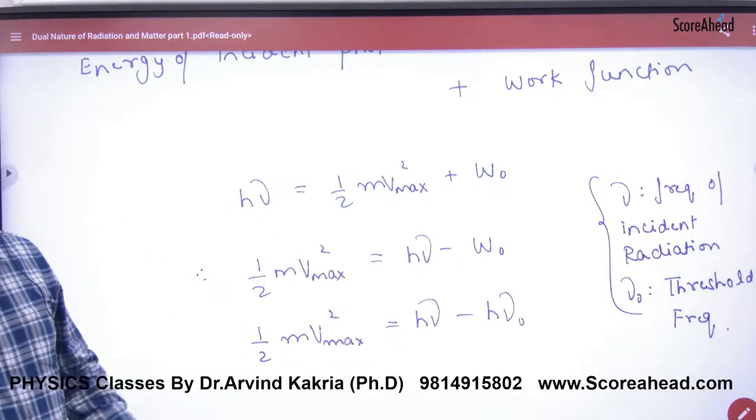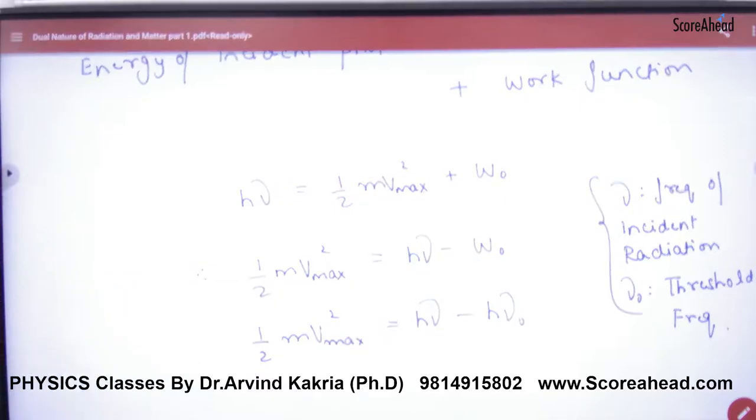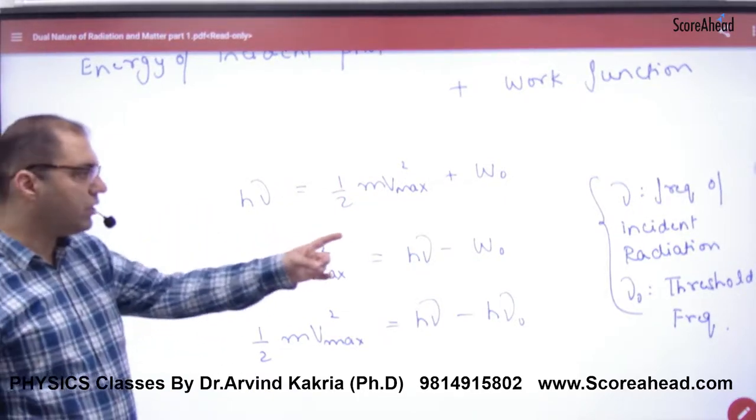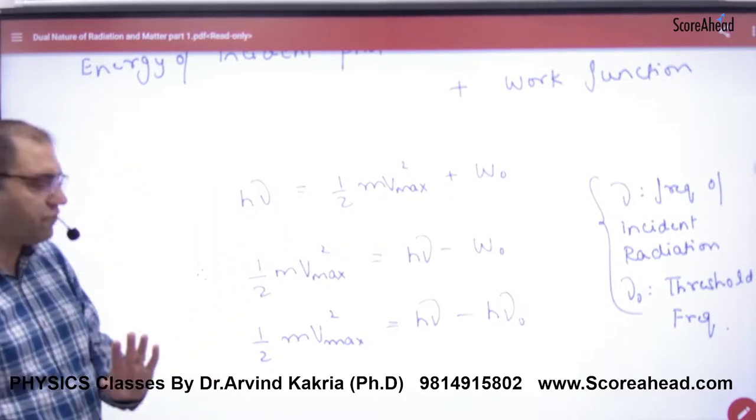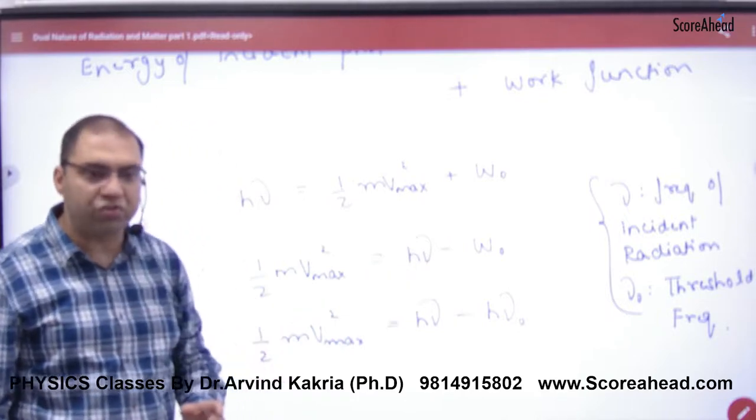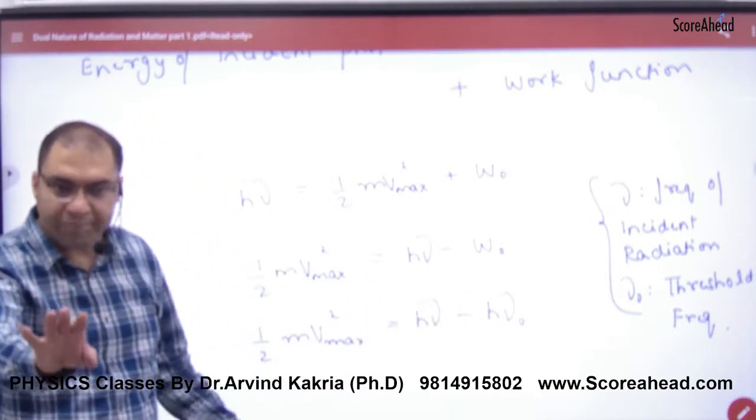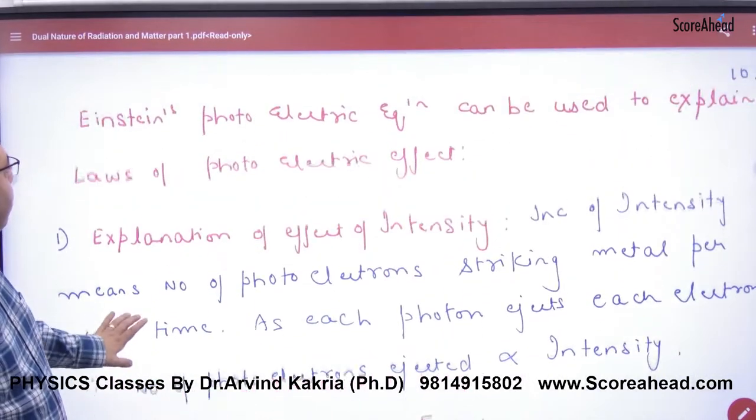H-nu equals the work function plus half mv squared. Here, nu is the frequency of incident radiation and nu-0 is the threshold frequency. Therefore, half mv squared equals H-nu minus the work function, which can be written as H-nu minus H-nu-0.